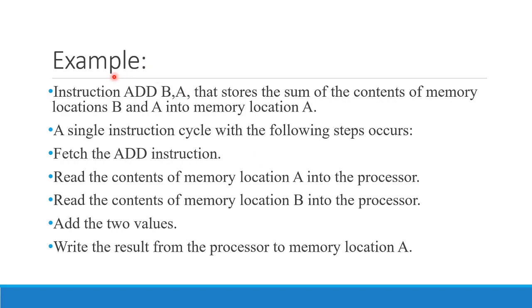We will look at a small example. The instruction is: ADD B, A. What does this instruction do? In the first step, the content of memory location A is loaded into a processor register. Then the content of memory location B is loaded and stored. Now both contents are in the processor registers. We add them and store the result from the processor back to memory location A.